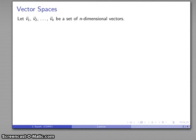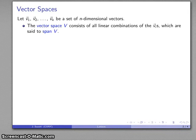Suppose I have a set of n-dimensional vectors. A little bit of a review of vector spaces that you may have seen in things like linear algebra. The vector space V is the set of all possible linear combinations of these vectors, and these vectors are said to span our vector space.